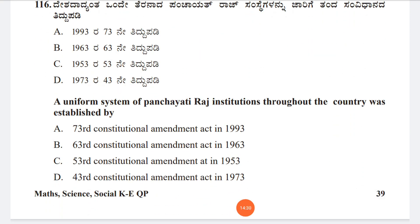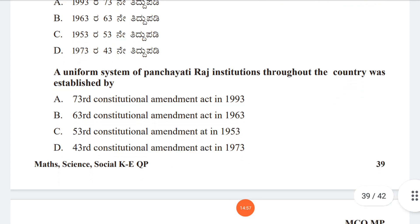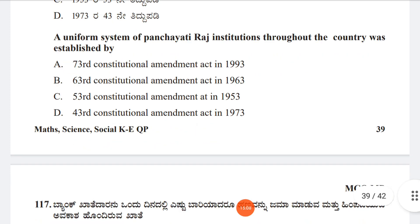Question 116: A uniform system of Panchayat Raj institutions was established by Option A: 73rd Constitutional Amendment Act in 1993, Option B: 63rd Constitutional Amendment Act in 1963, Option C: 53rd Constitutional Amendment in 1953, Option D: 43rd Constitutional Amendment Act in 1973. Option A is correct — 73rd Constitutional Amendment Act in 1993.